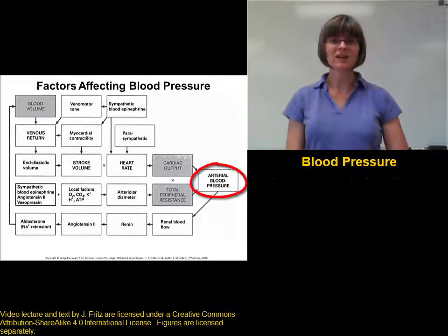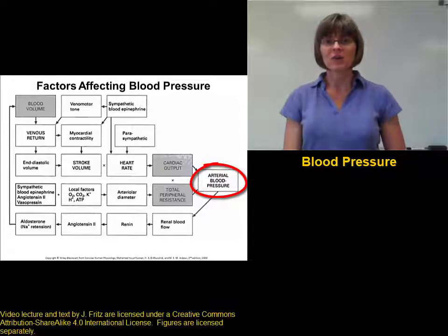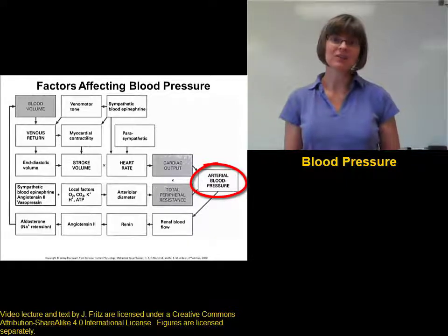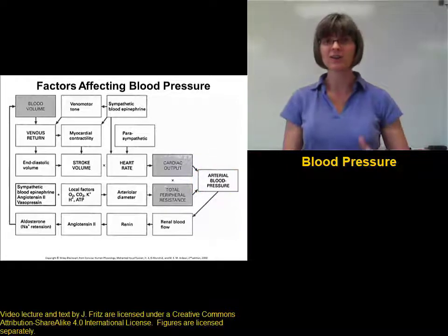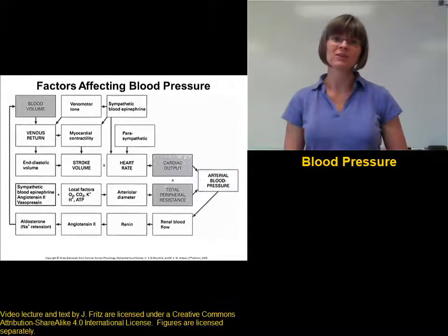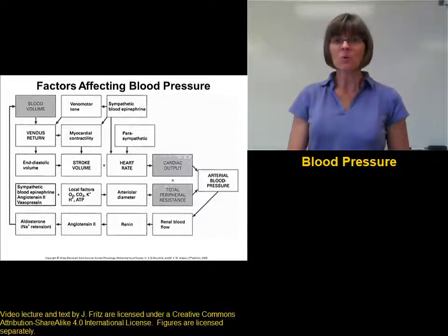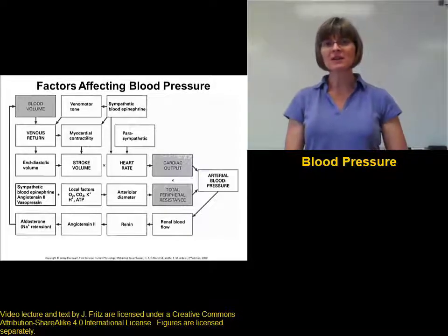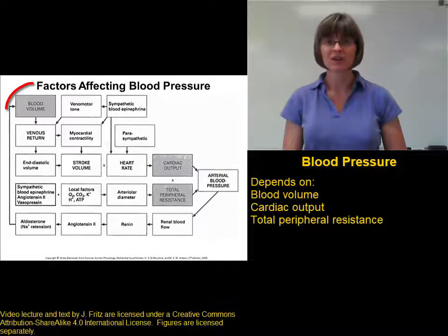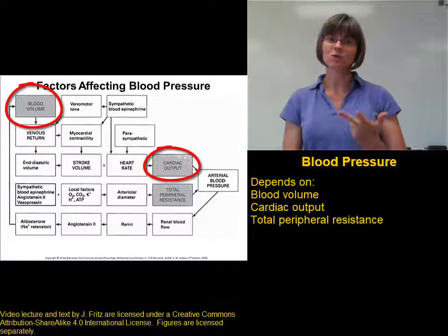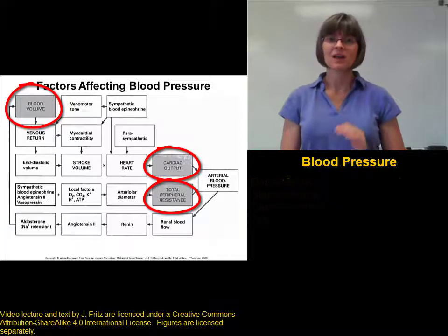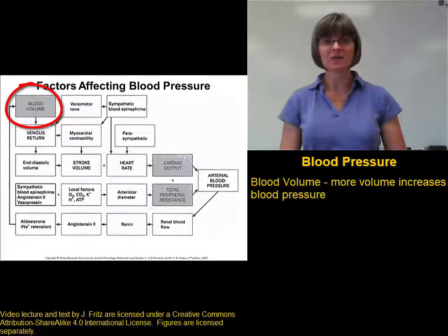Blood pressure regulation is complicated because of the number of factors involved. We're going to talk about a lot of these different factors that affect blood pressure, and we are going to address almost everything shown in the figure. We're going to begin by looking at the three main components that affect blood pressure: blood volume, cardiac output, and total peripheral resistance.